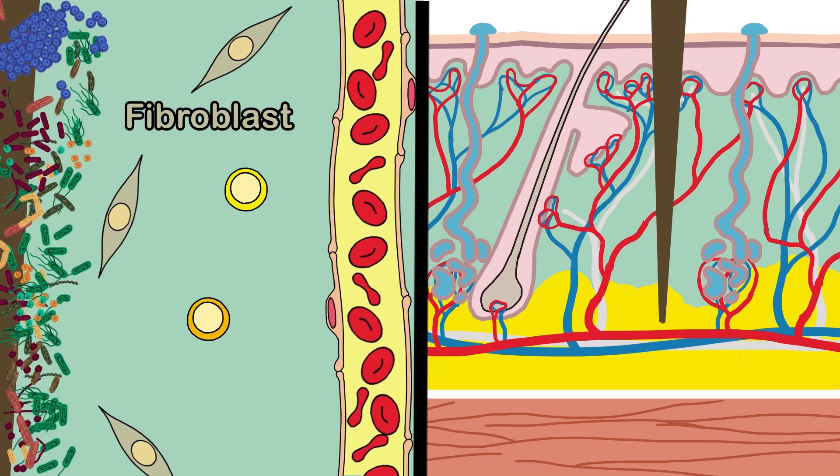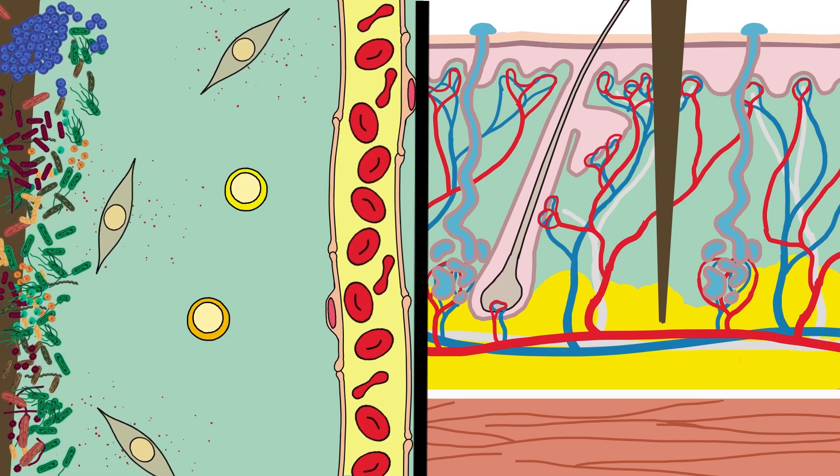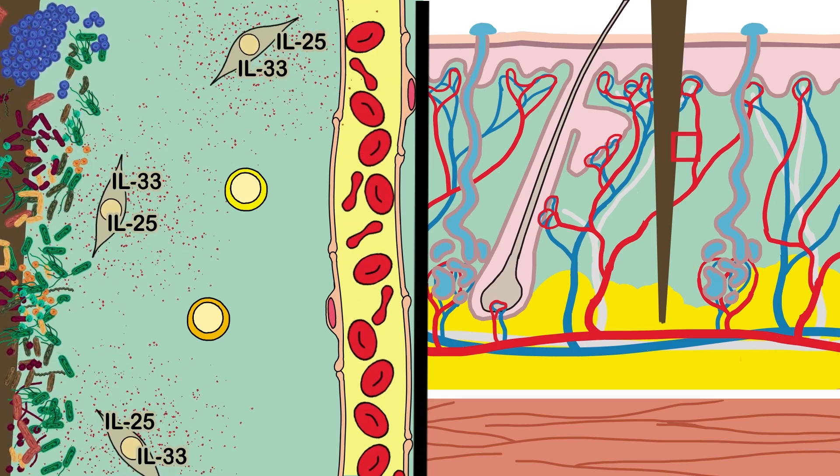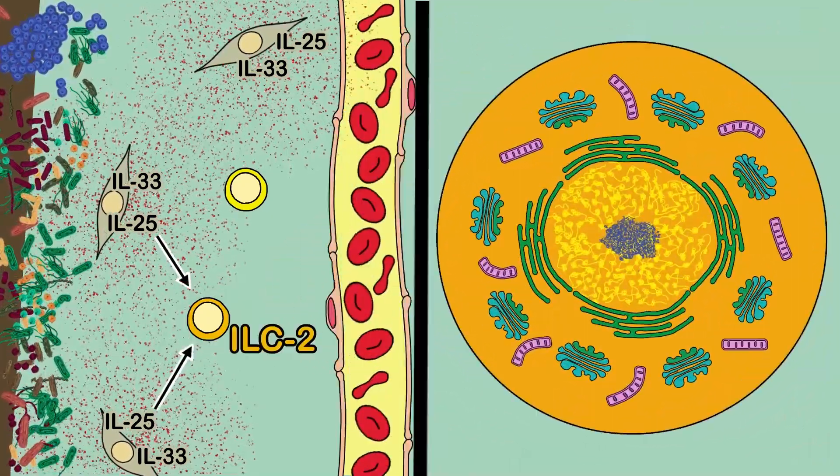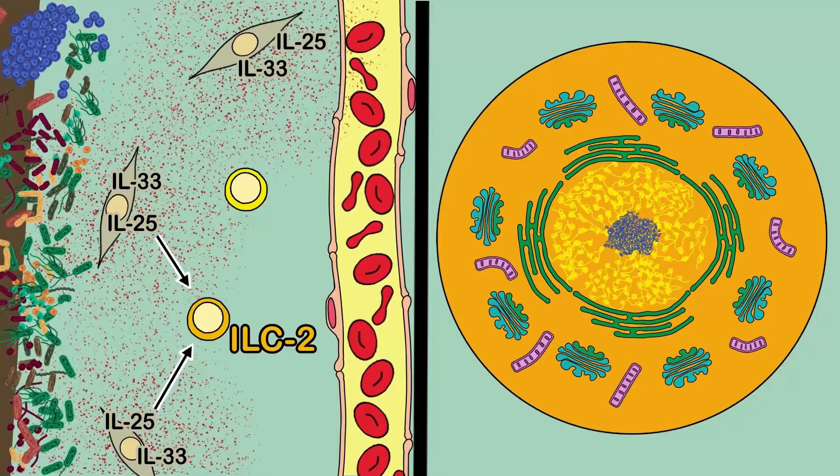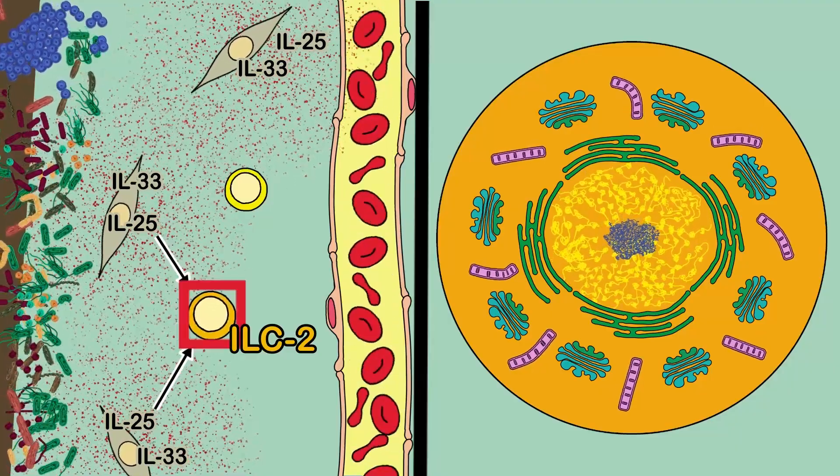Fibroblasts immediately detect tissue damage and secrete cytokines like IL-33 and IL-25. IL-25 binds with receptors on type 2 innate lymphoid cells or ILC2 and activates them.